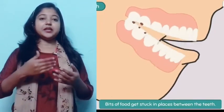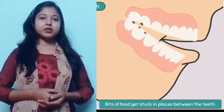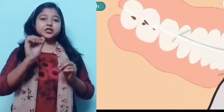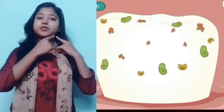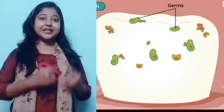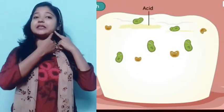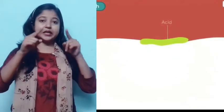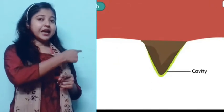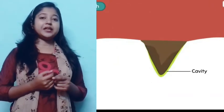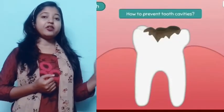So what will happen if the food particles stay inside our teeth? Small living things called germs will eat that food from our teeth. And then they will leave acid. That acid will create a hole in our teeth — like in this video, can you see this? This acid is creating a hole in our teeth. This is called tooth decay, or cavities.